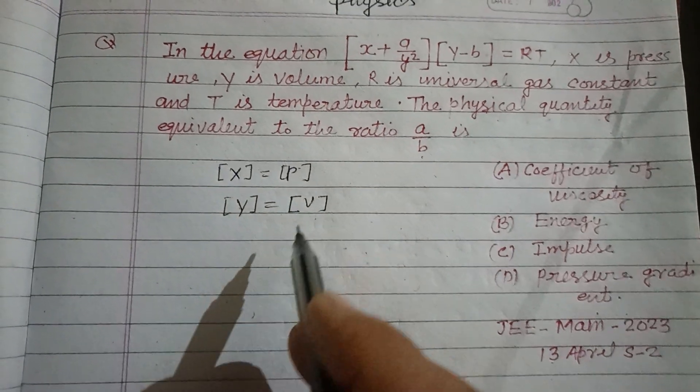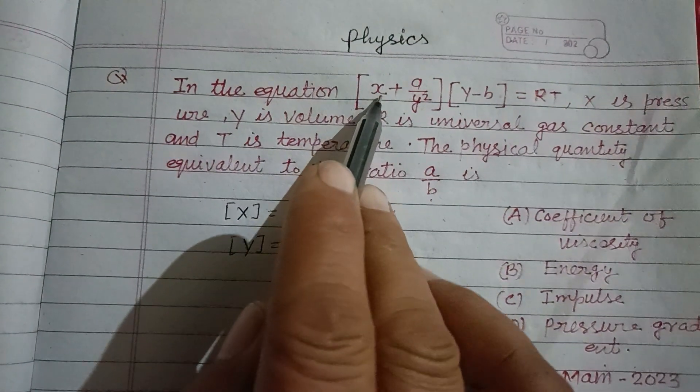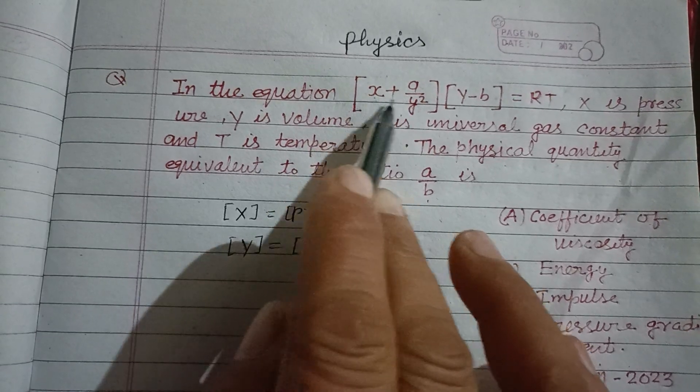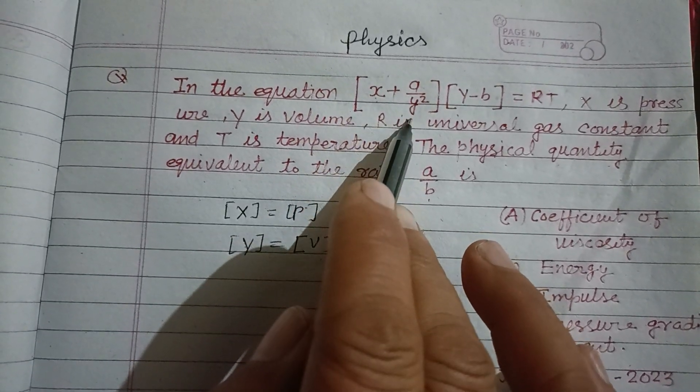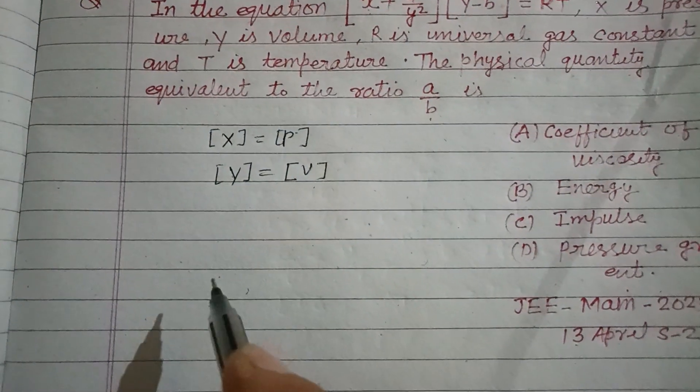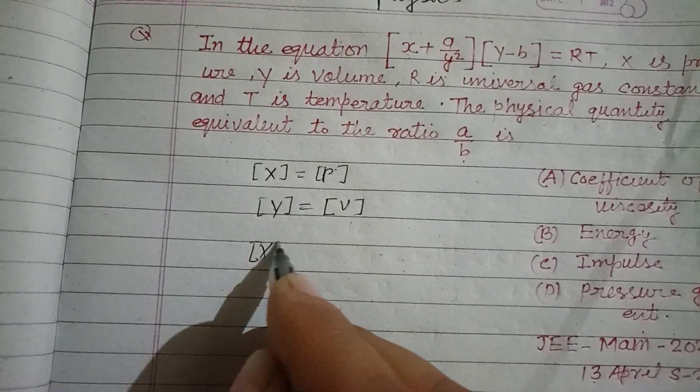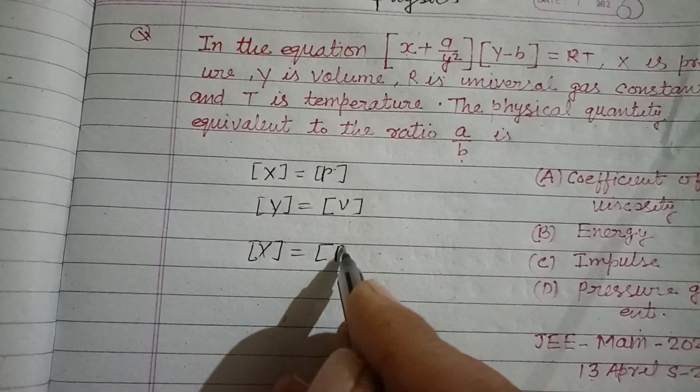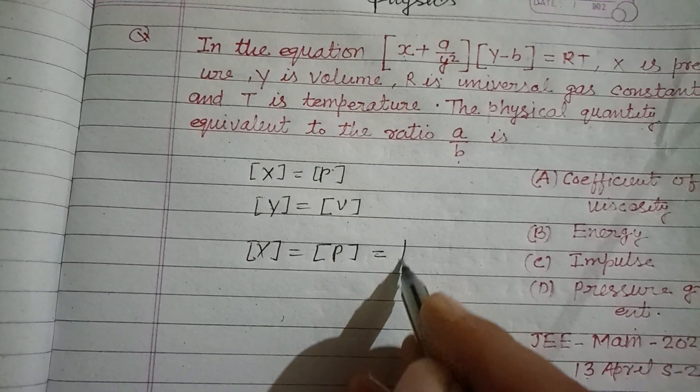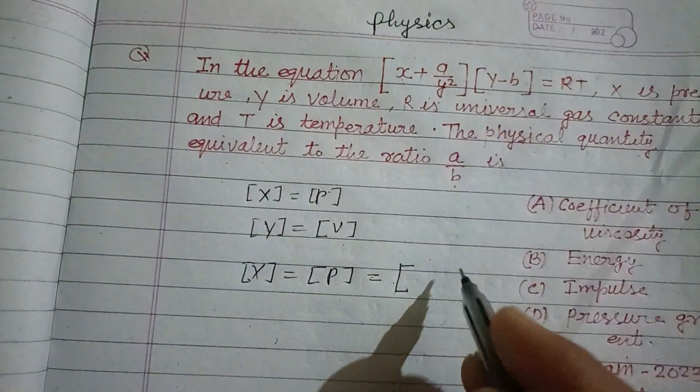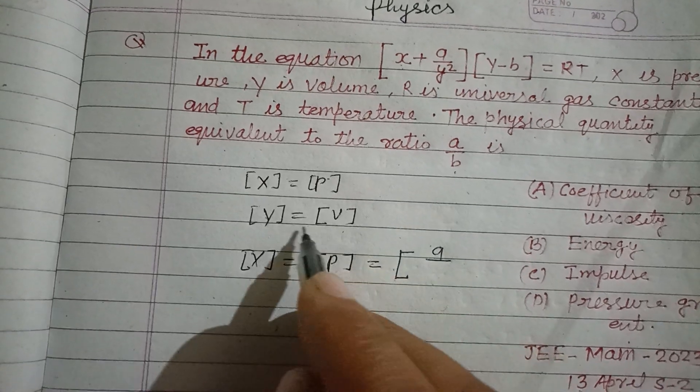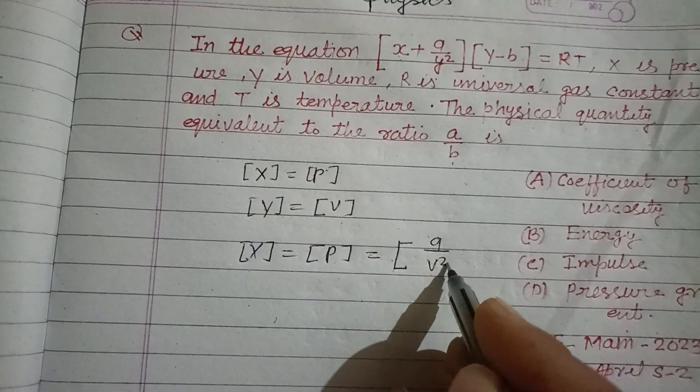You know that the same quantity is added to each other, therefore a/y² is also pressure. So x = P, which means a/y² = P, giving us a = Pv².